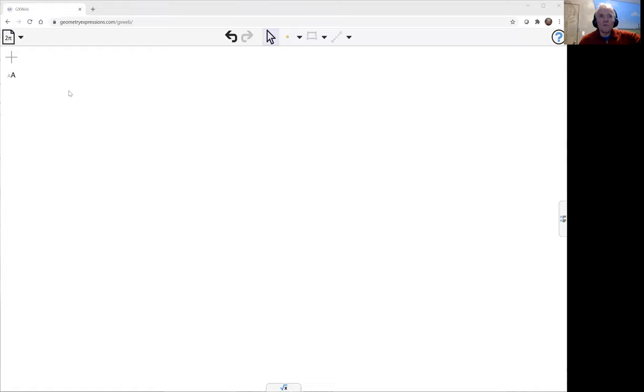So we're in GXWeb, we'll give ourselves some axes and this mechanism. Effectively we have a link AB. Attached to that is another link whose angle is constrained to be fixed.